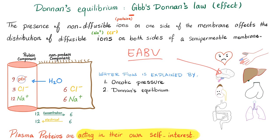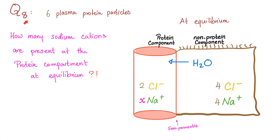If your woke professor explain it like this, I will retire from YouTube and work as a Whopper flopper. Today's question: imagine that you have protein compartment and non-protein compartment. You had six plasma protein particles. In the non-protein compartments, you had four chlorides and four sodium. In the protein compartment, you had two chlorides and how many sodium at equilibrium? Please answer this question in the comment section. You'll find the correct answer in the next video.